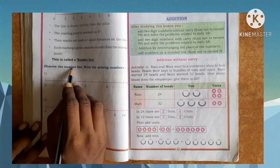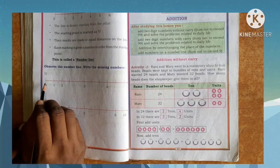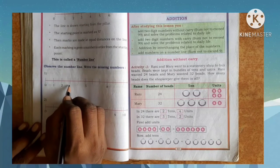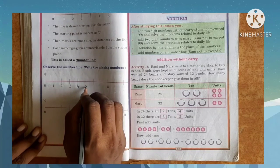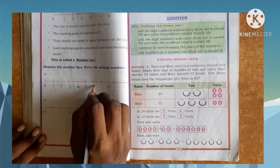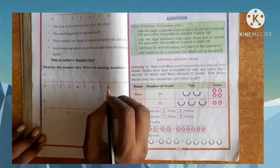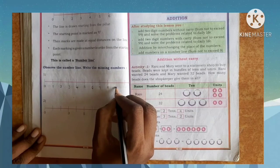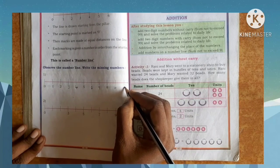Observe the number line and write the missing numbers. First one: 0, 1, 2 — next number is 3, next is 4. 5 is already written. Next is 6, then 7. 8 is already written. Next is 9, then 10.